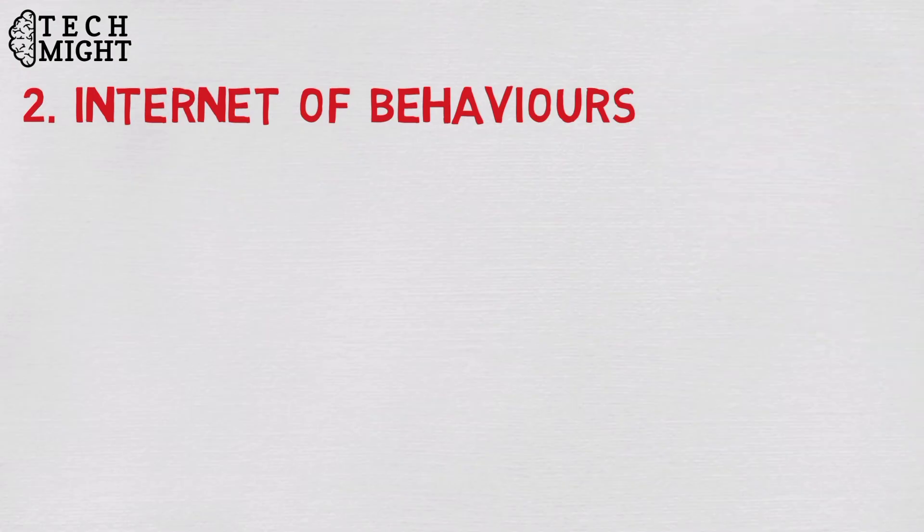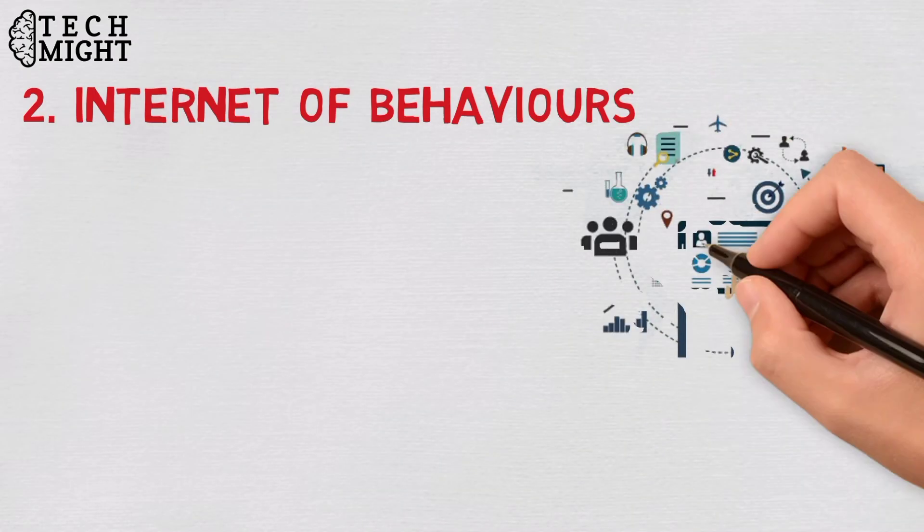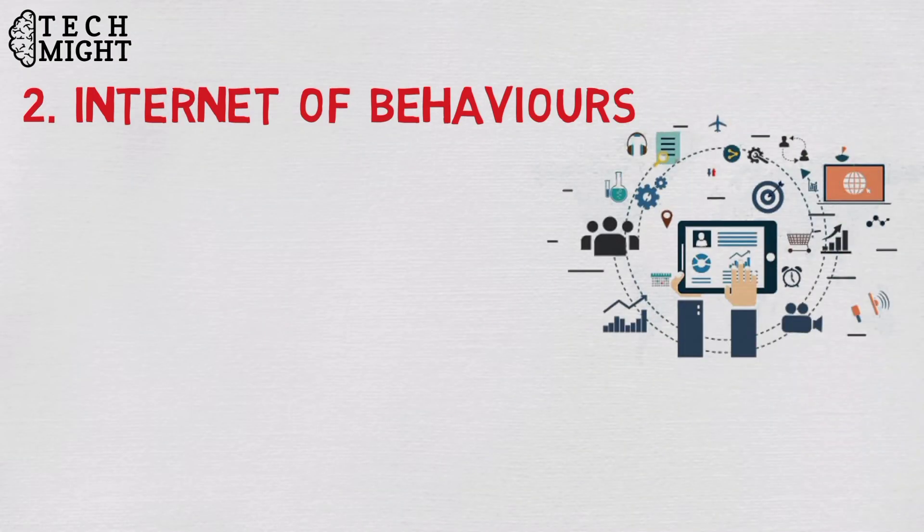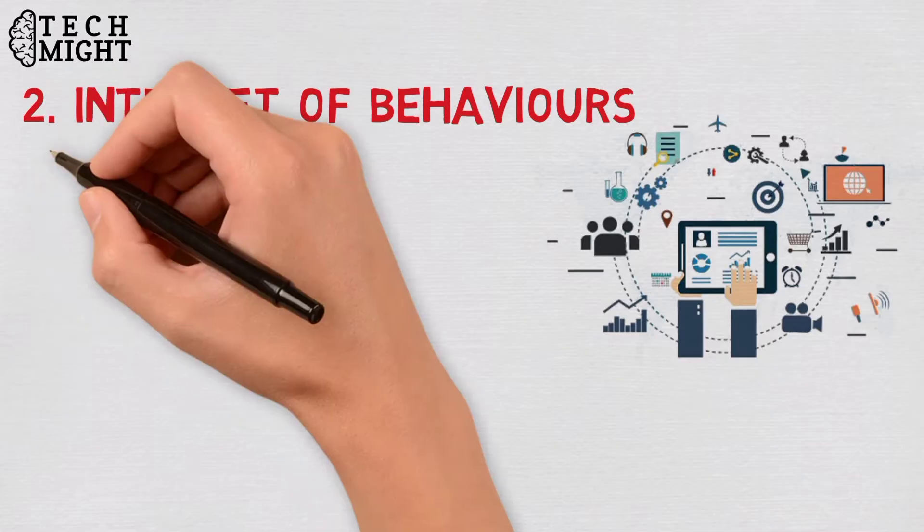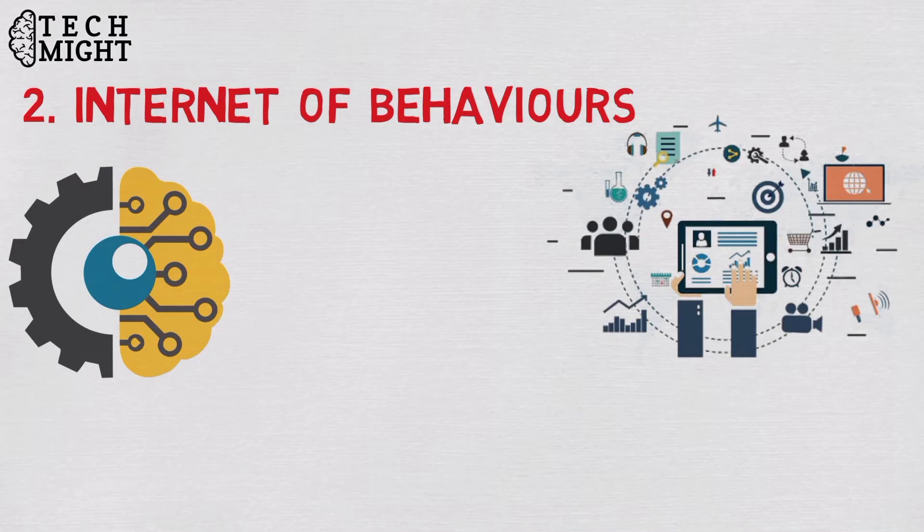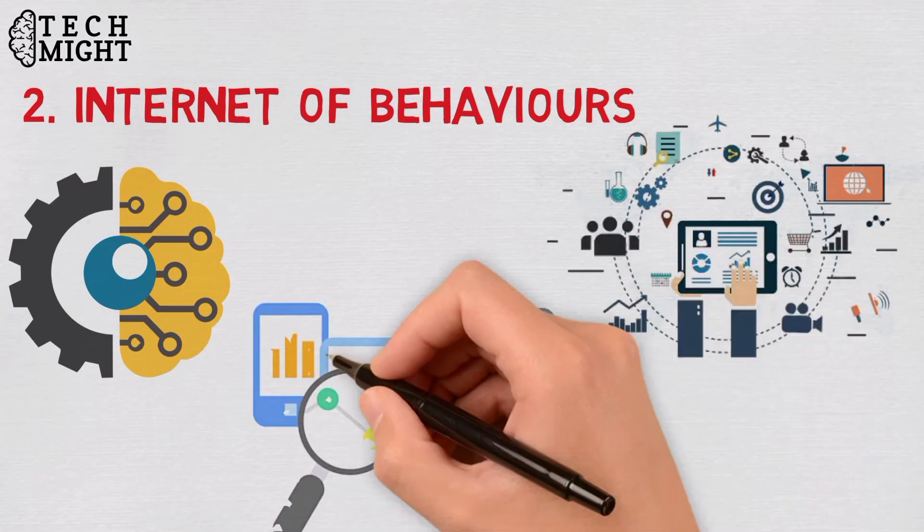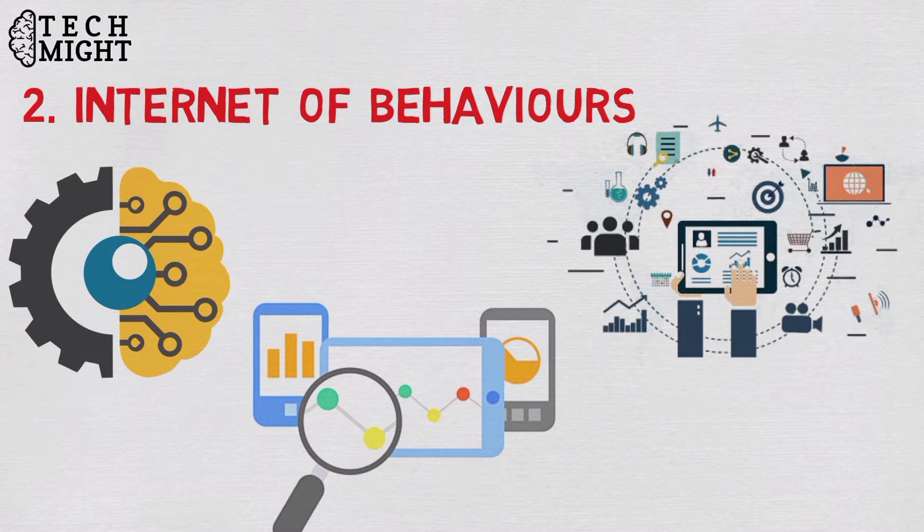Internet of Behaviors. The collection and use of data to drive behaviors is called the Internet of Behaviors. An example of it is industrial sites having employed computer vision to determine if employees were complying with mask protocol, and then collecting this behavioral data to be analyzed by organizations to influence people to follow government protocols at work.